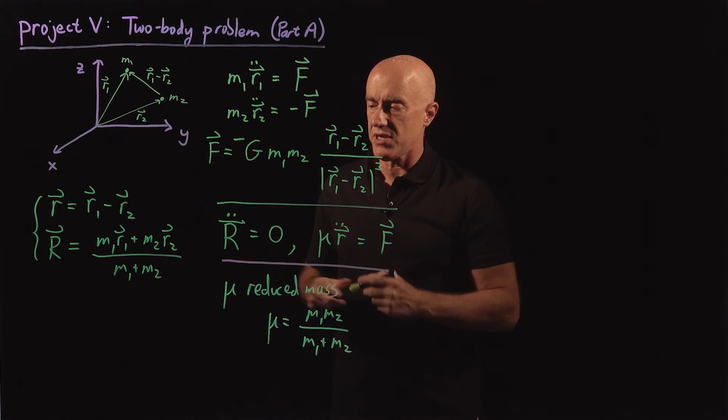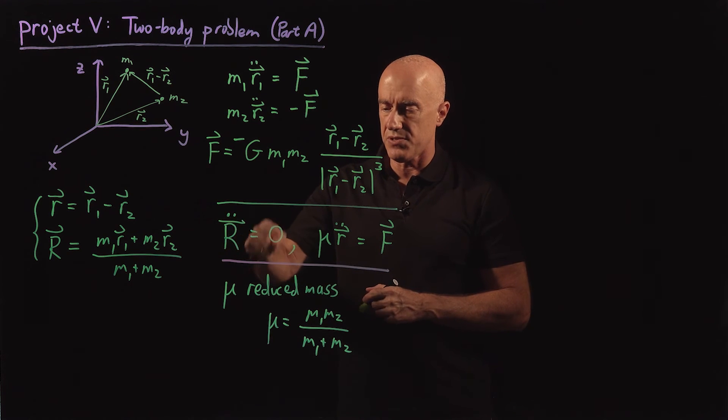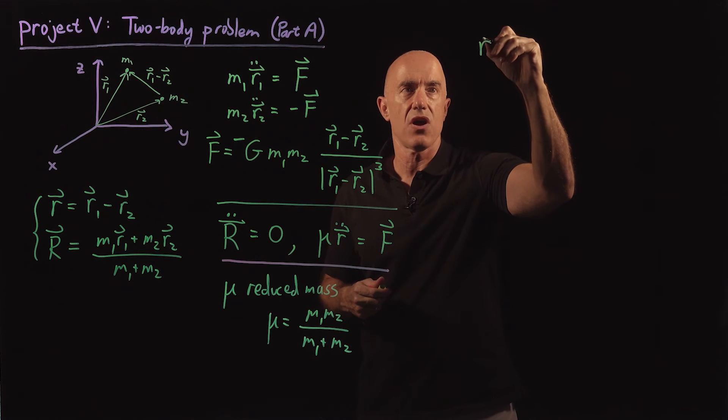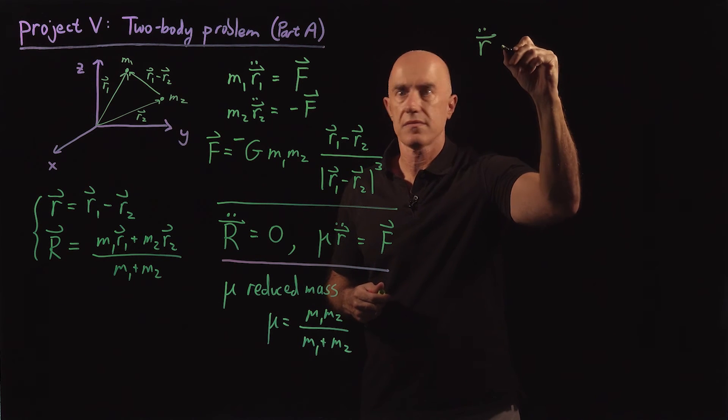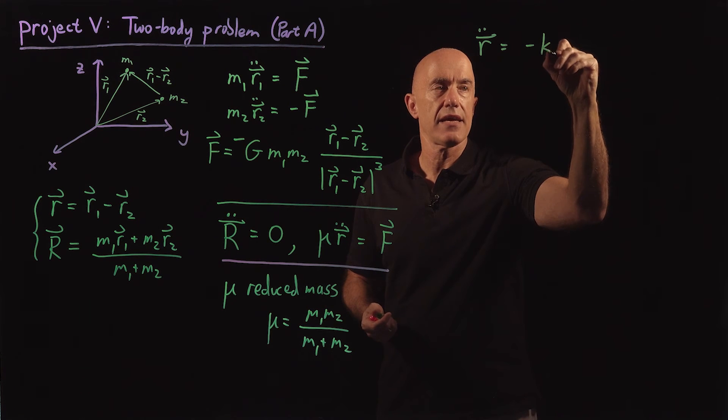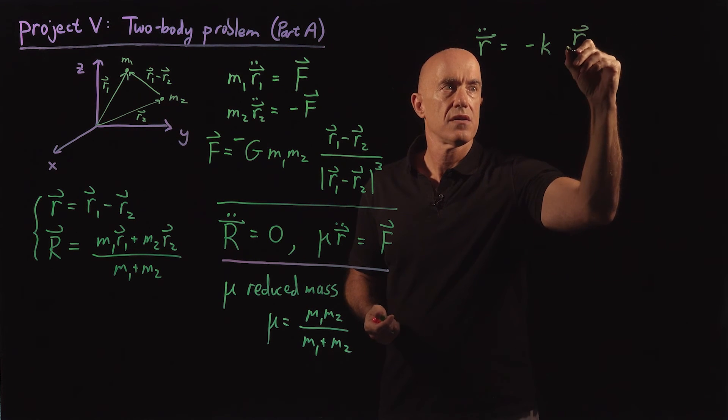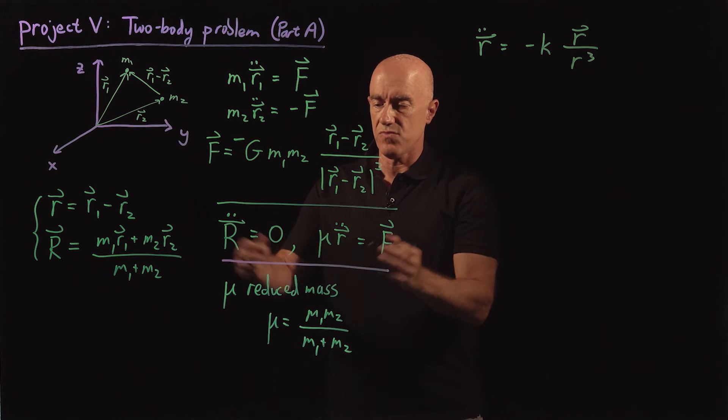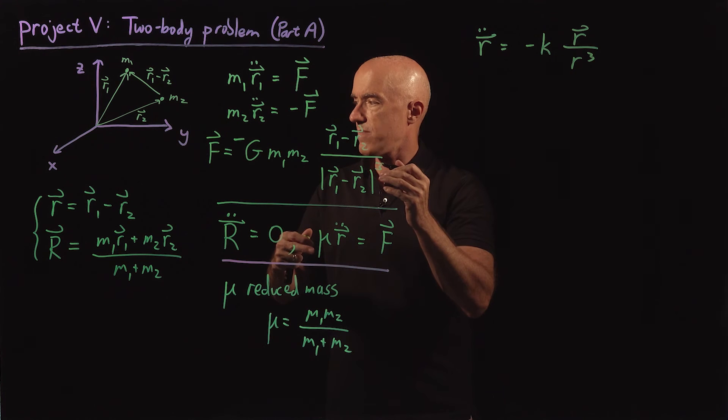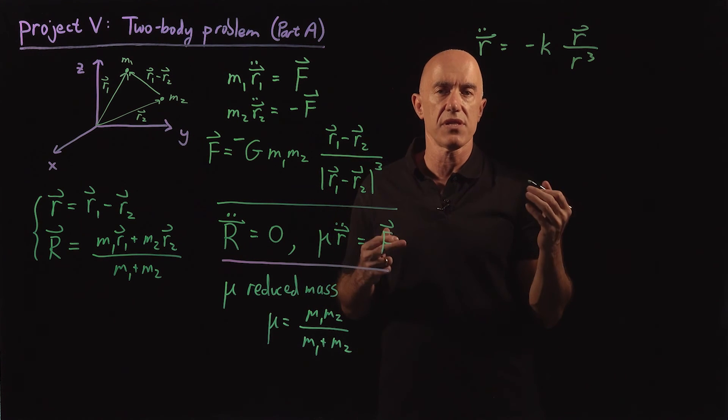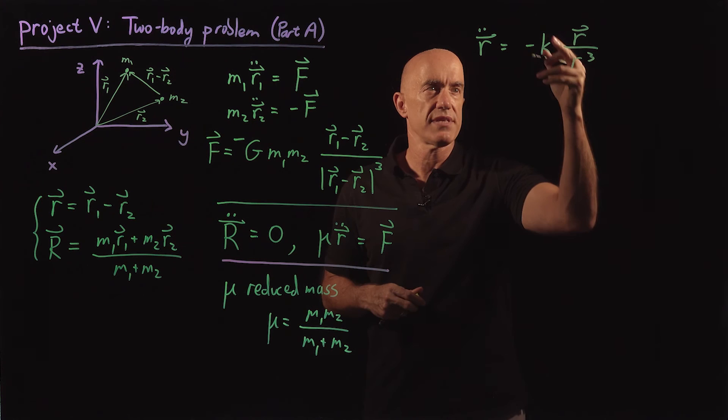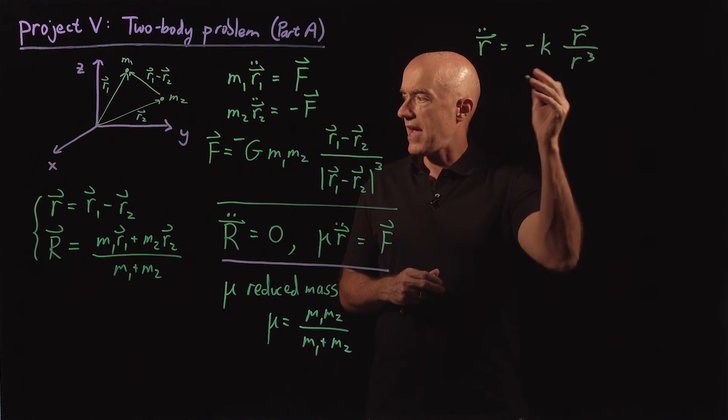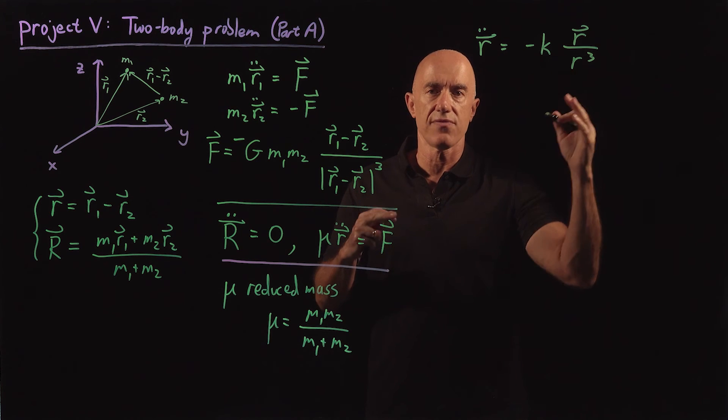The first equation will be very simple to solve. The second equation we'll see, we'll write that simply as r double dot is equal to minus k times r over r cubed. And this k constant will be coming from the masses. It doesn't really matter, because we'll use that in the non-dimensionalization of the equations.